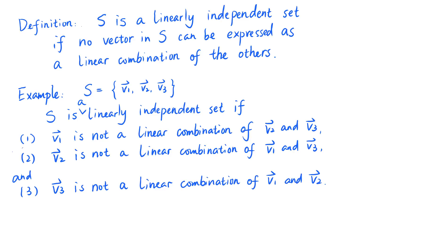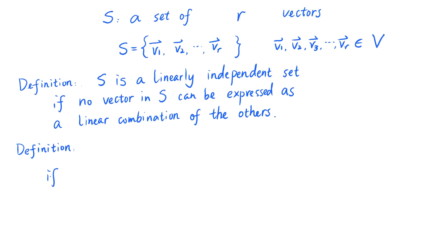And if any of these three statements is not true, then the set S is not a linearly independent set. And if S is not linearly independent, then S is said to be linearly dependent.